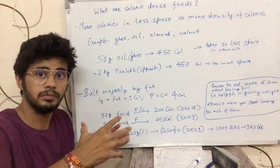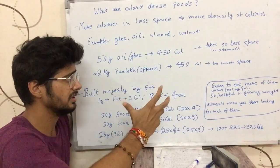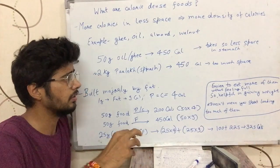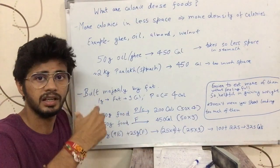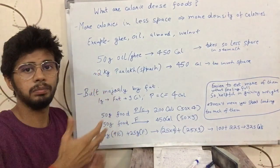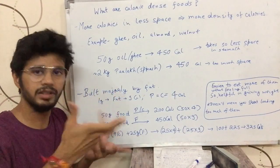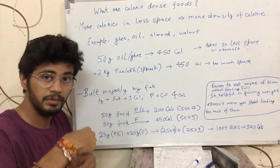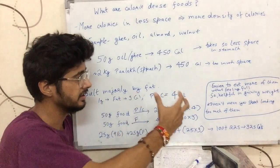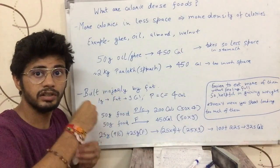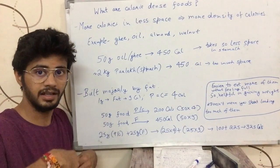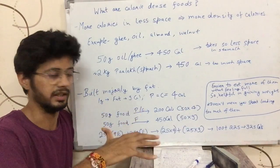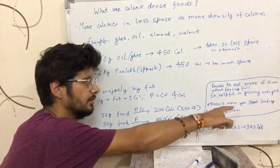So the calories are higher when you eat fat-rich foods. You can eat more calories in less volume. If you want to eat more calories and want your belly to fill less, choose calorie dense foods. If you want fewer calories and to feel fuller, choose calorie sparse foods — they take more space and you will eat more food by volume from one serving.